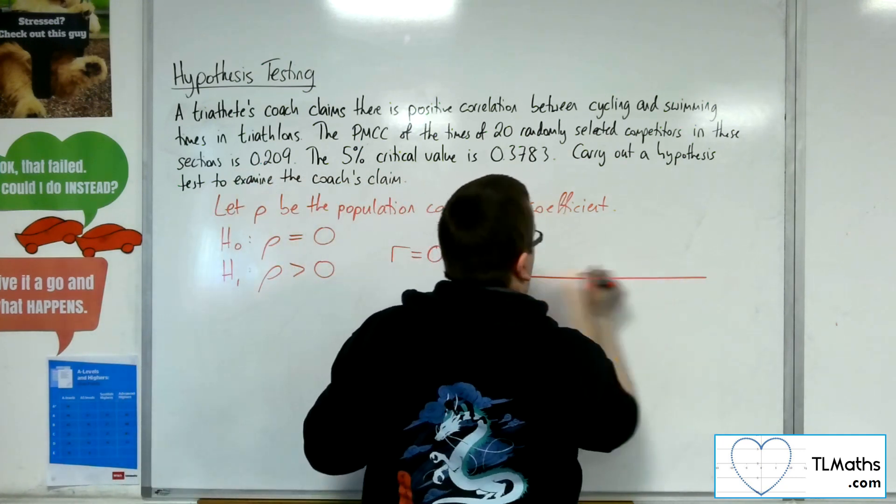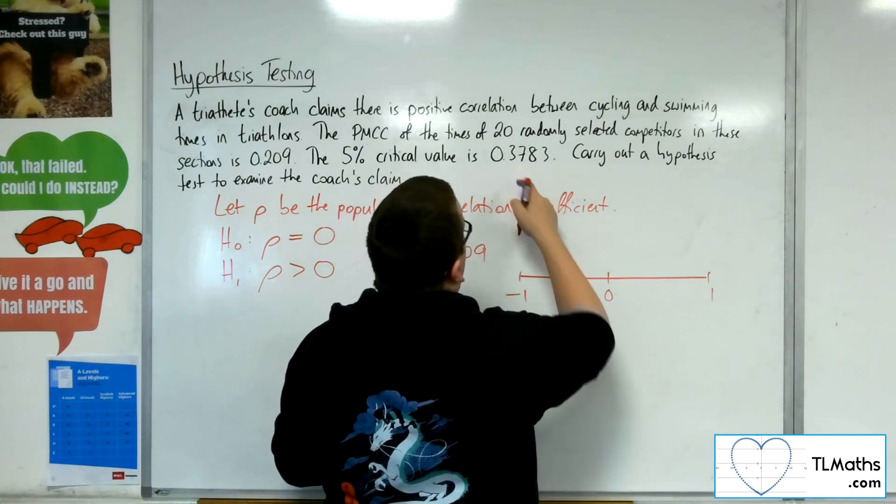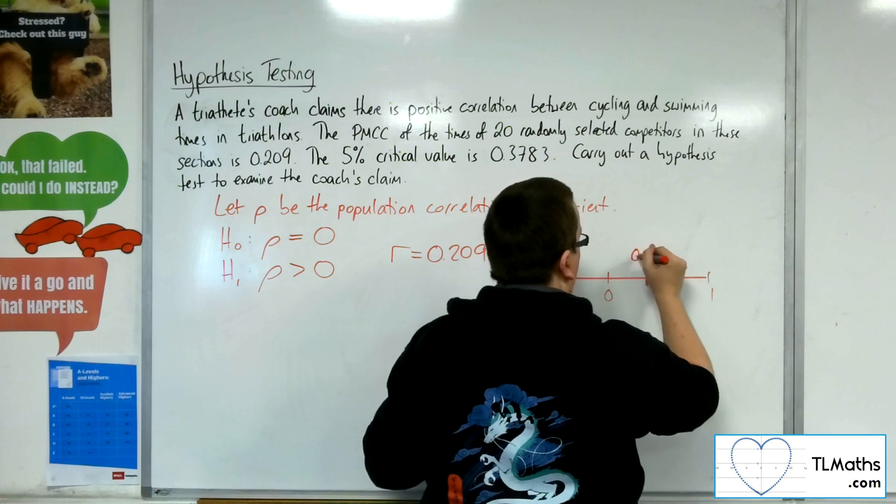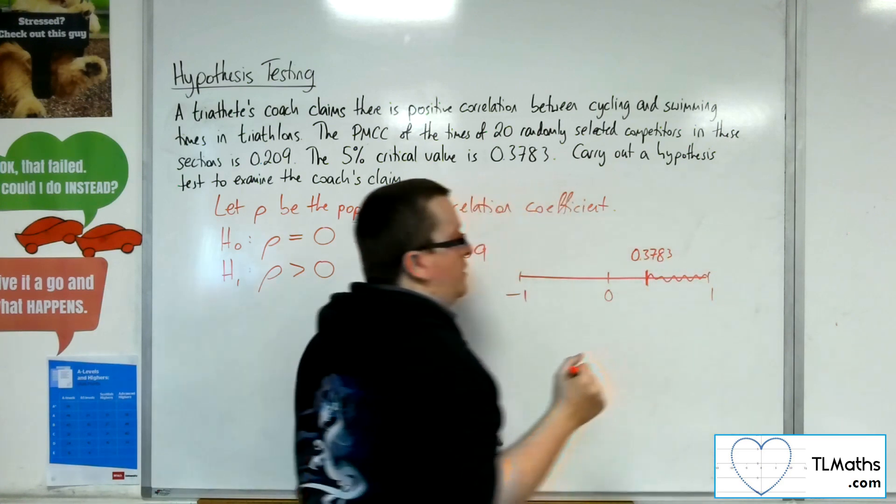So if this is minus 1, that's 1 and that's 0, and the critical value is 0.3783, so about there, then that is the critical region.